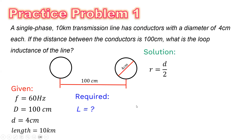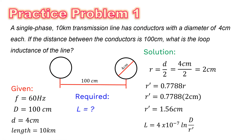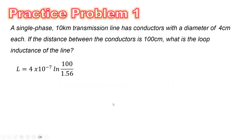To solve that, let us solve for the radius first. Radius is equal to diameter divided by 2, so that is 4 cm divided by 2, which equals 2 cm. So we can now solve for R prime, or the GMR. That is equal to 0.7788 times R. So we simply plug in the value of the radius, which is 2 cm, giving R prime equal to 1.56 cm. Now we can substitute all the given values into our equation: inductance is equal to 4 times 10 to the negative 7, natural logarithm of D over R prime.